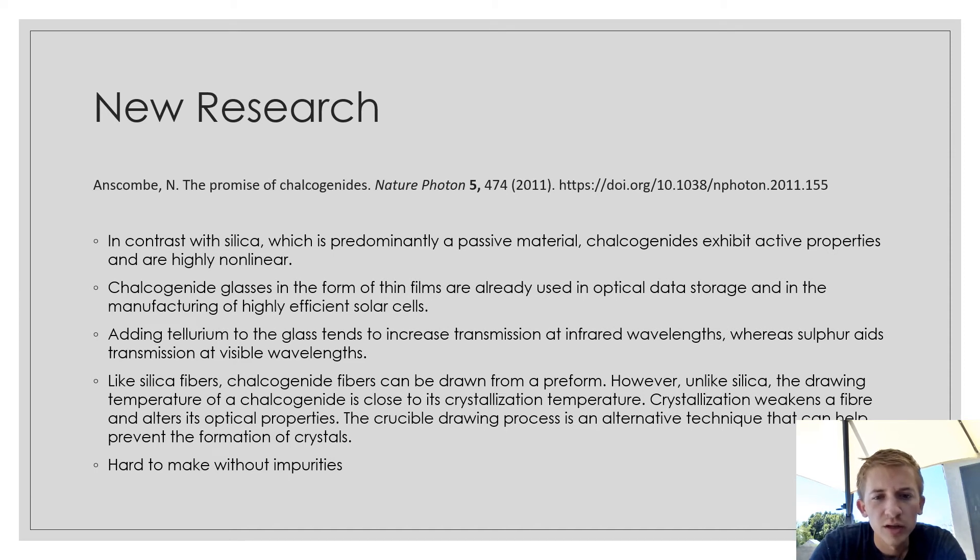Unlike silica fibers, the chalcogen fibers can be drawn from a preform. But unlike silica, the temperature of a chalcogenide is close to the crystallization temperature when drawing. Crystallization weakens a fiber and alters the optical properties, so you don't want it to crystallize and there's alternative techniques that try to prevent this. However, it's hard to make without any impurities and even a few parts per million can sometimes ruin the product.